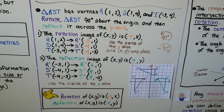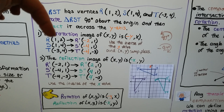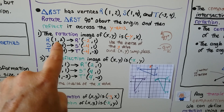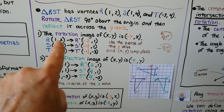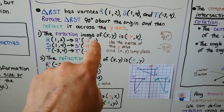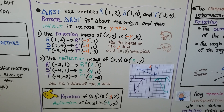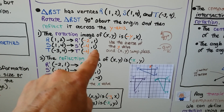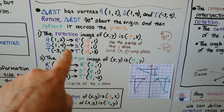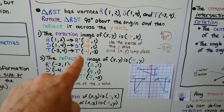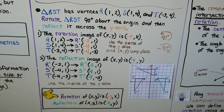So for R at (1, 2), the new x is the inverse of y, which is −2, and then 1 comes over as the y — giving R prime at (−2, 1). S at (1, 4) becomes (−4, 1) — inverse of y then x. T at (−3, 4) becomes (−4, −3) — inverse of 4 is −4, and −3 stays.